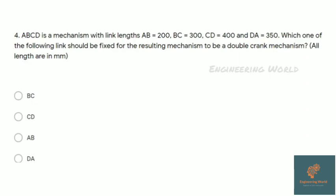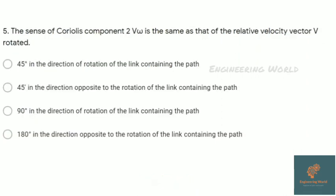When we fix the smallest link in a class 1 mechanism, we obtain a double crank mechanism. Here AB is the smallest because AB=200, so when we fix AB, we will get a double crank mechanism. The answer is AB.